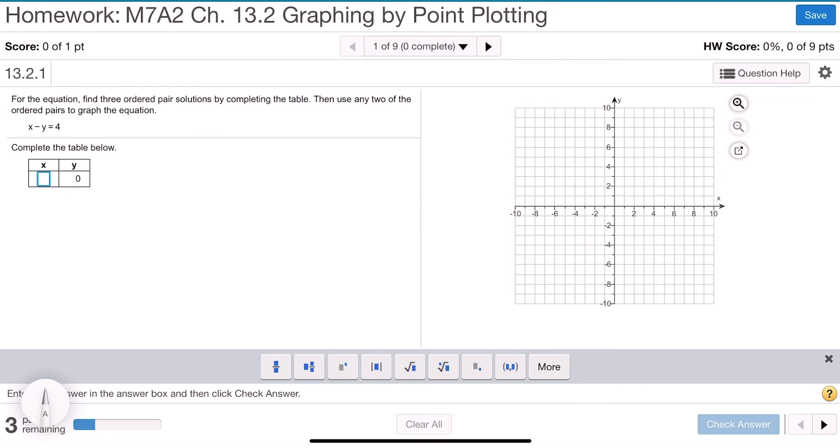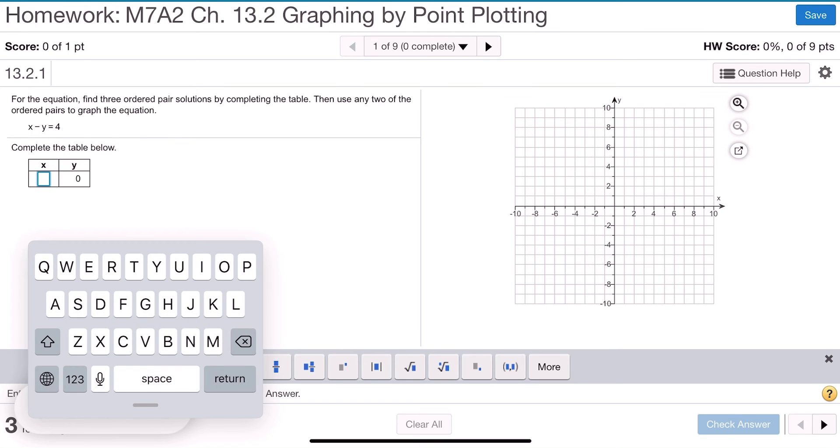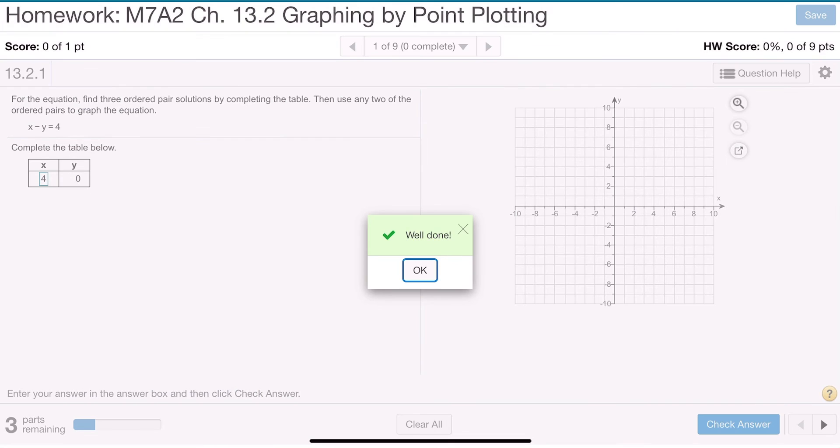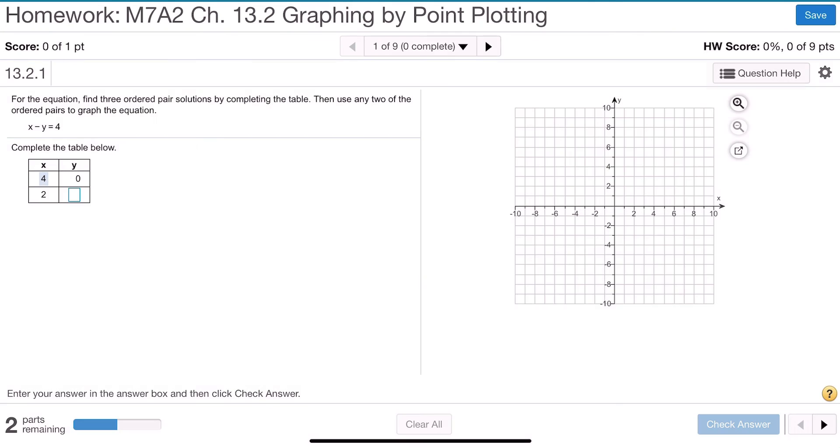So I want to put that answer of x is 4 in that block that they gave me. So I'm going to put the 4 in there, and then I'm going to check that, and if the answer is correct, I choose the okay as usual, and I go to the next question.